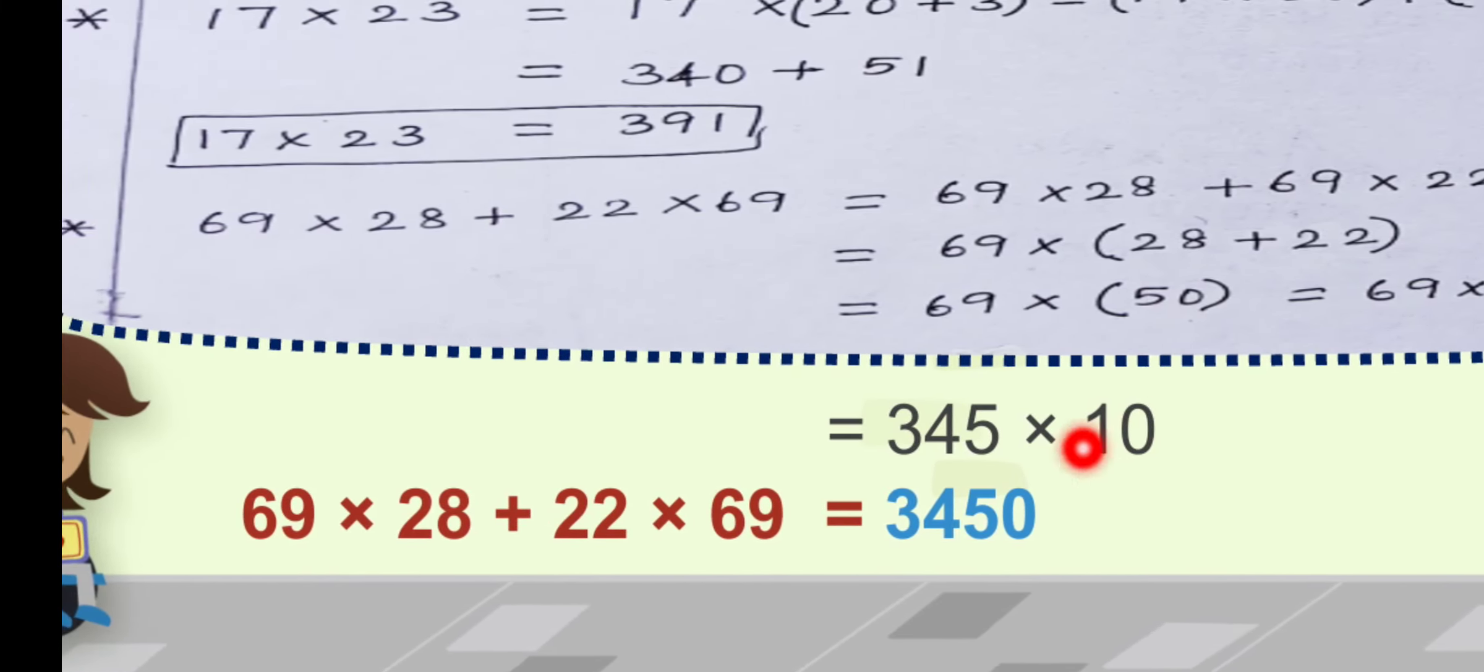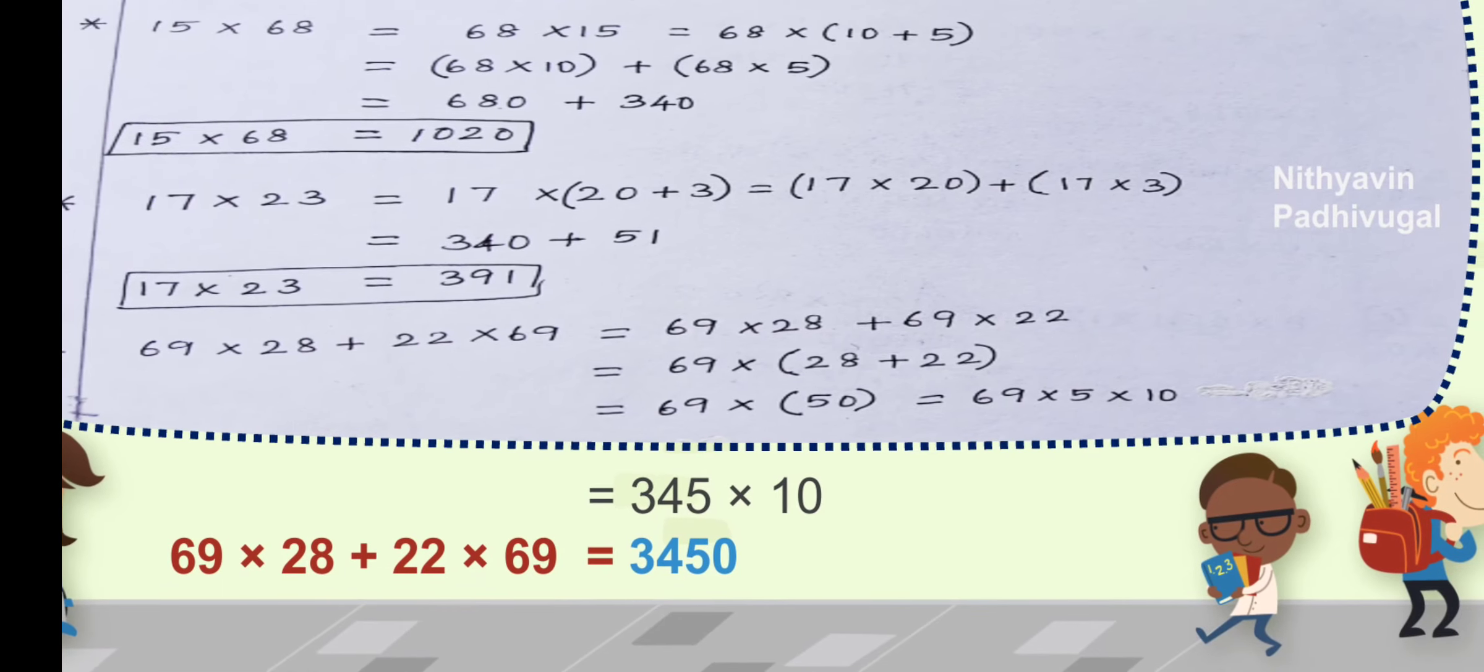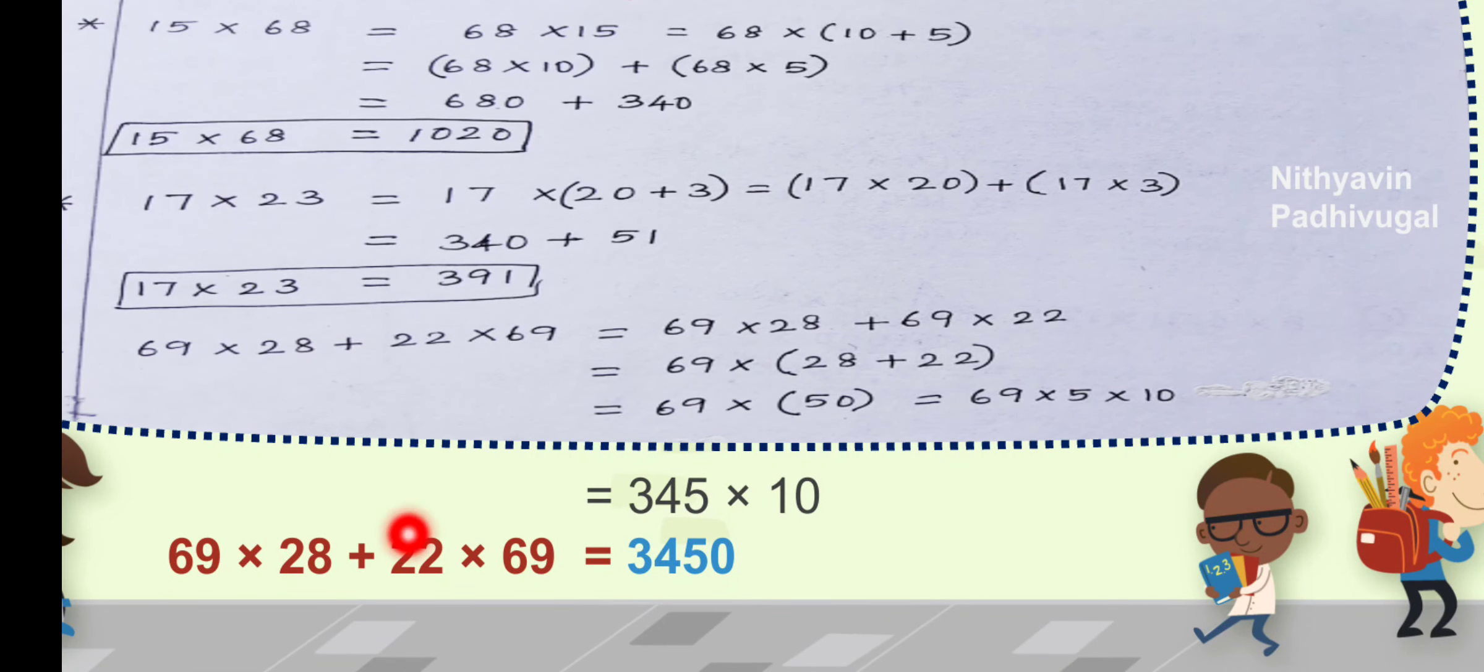You can also split 50 as 69 into 5 into 10, which means 345 into 10, which is, you know very well, equal to 3450.